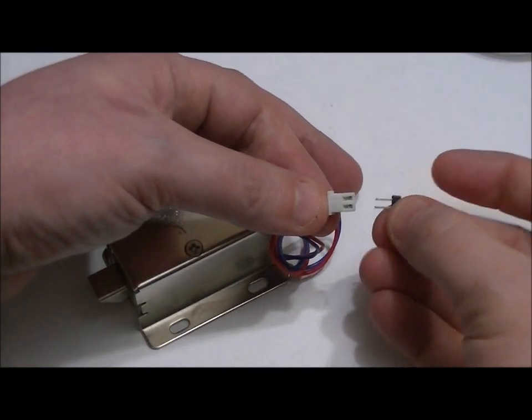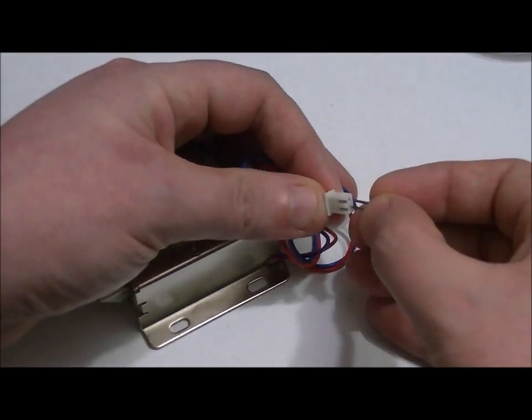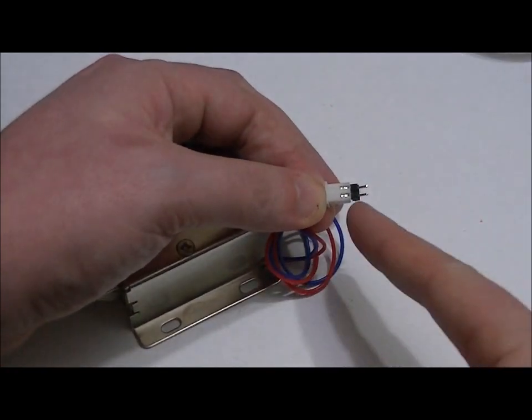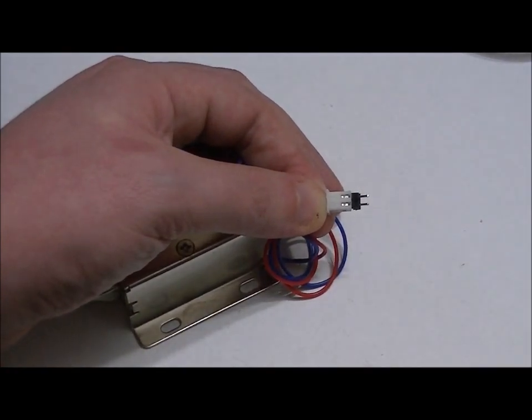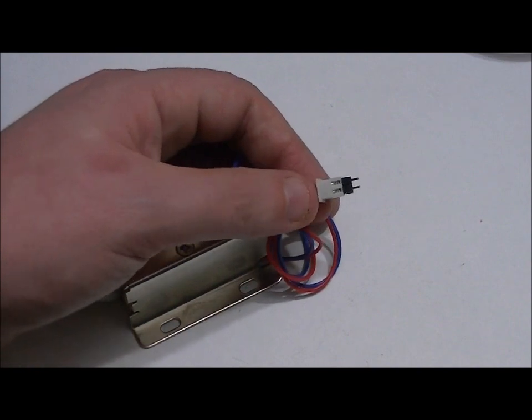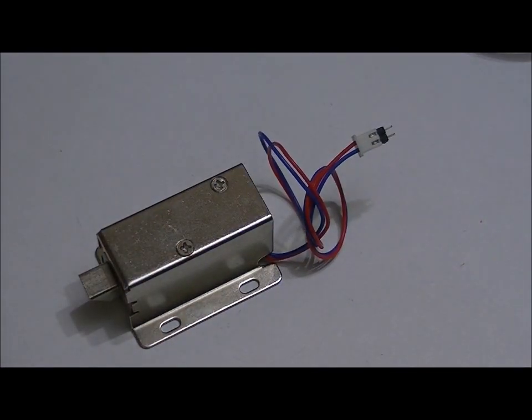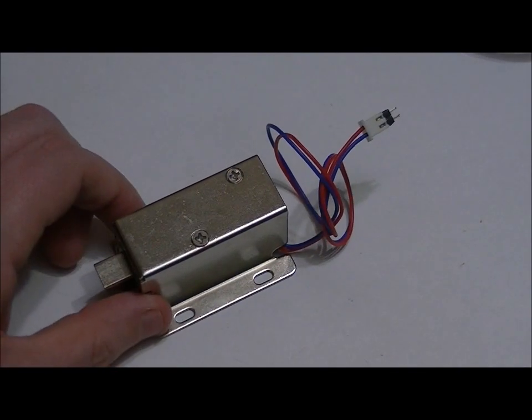Now what I've got here is just a general 2-pin header. And I'm going to feed it through the holes. So now I can actually connect power to it. But I'm also going to need a diode.